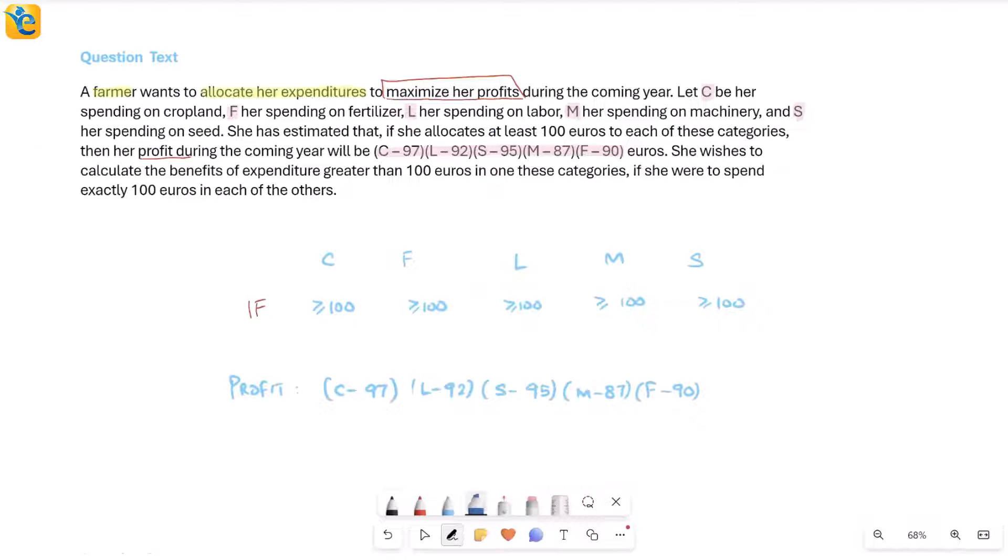It says she wishes to calculate the benefits of expenditure greater than 100 euros in one of these categories if she were to spend exactly 100 euros in each of the others. So here she's considering: what if I spend 100 exactly on four of these categories, and on one of them I spend more than 100? Right now I just wrote it under S, but that is not mentioned. It is just saying one of these categories she will increase beyond 100 dollars, and for the others it will be 100.